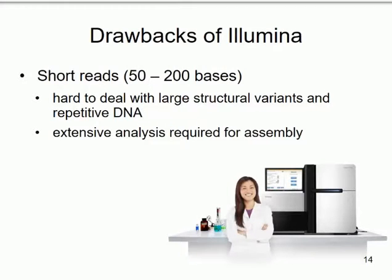Illumina is wonderful and widely used, but there are problems. First, it's tricky to deal with large structural variants — big inversions, big deletions — and regions of repetitive DNA or sequences that occur multiple times within the genome. The assembly process, particularly for novel genomes, requires a lot of computational power: very large data files and sophisticated software running for quite a long time to assemble the contigs and scaffolds.